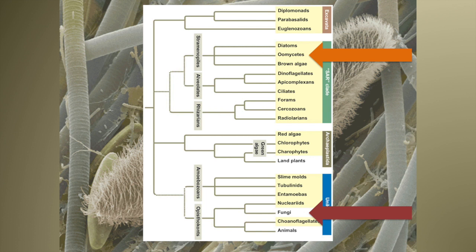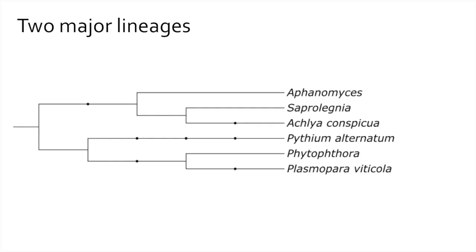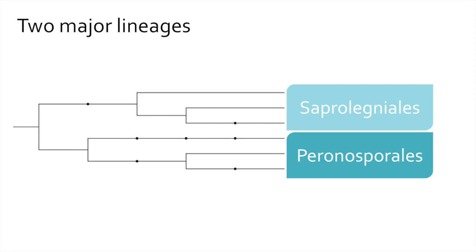However, they do not share close common ancestry with mushrooms and the like in the kingdom Fungi. But they do share many homoplasious characters that confused mycologists for many years before DNA techniques settled the question definitively. With only about 500 described species of oomycetes, the majority are confined to two orders, the Saprolegniales and the Peronosporales.